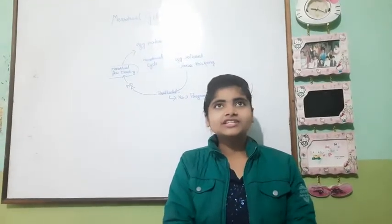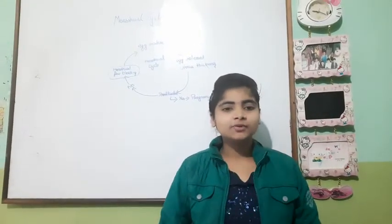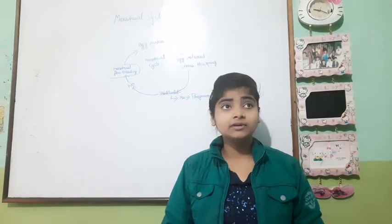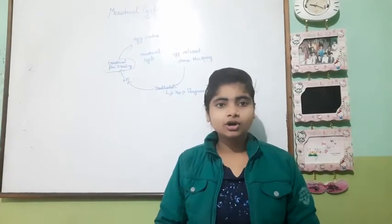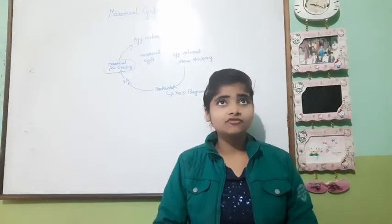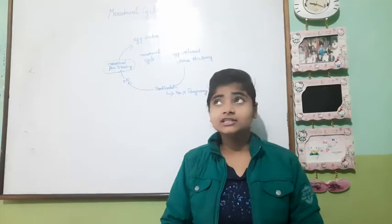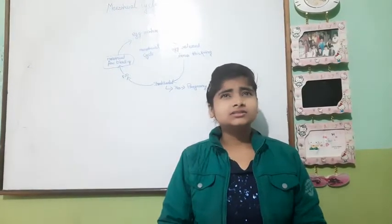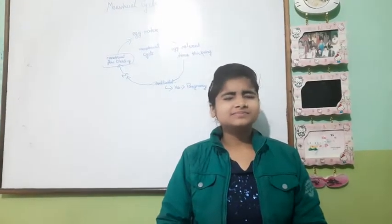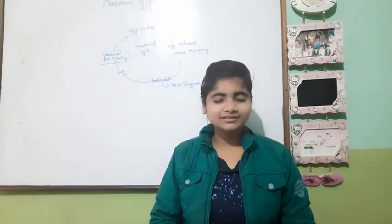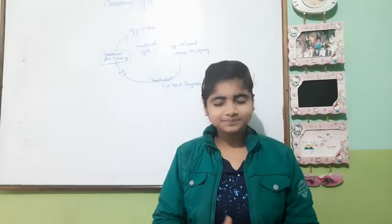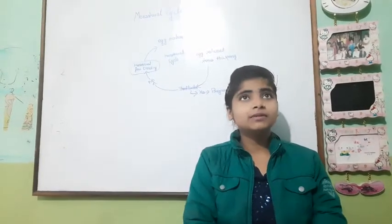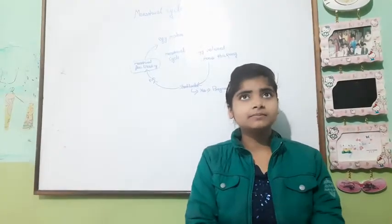In menstruation, the onset of puberty is marked by the release of a matured egg. The releasing of a matured egg is called ovulation. During ovulation, the wall of the uterus becomes rich in blood vessels and becomes thick.